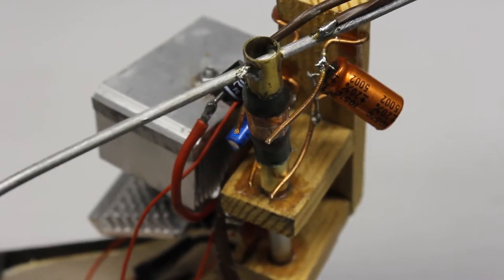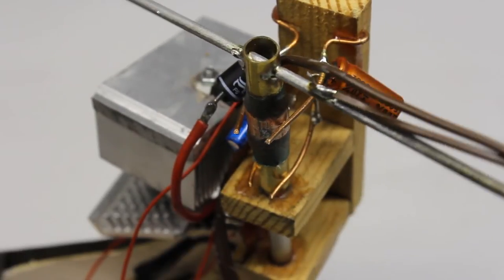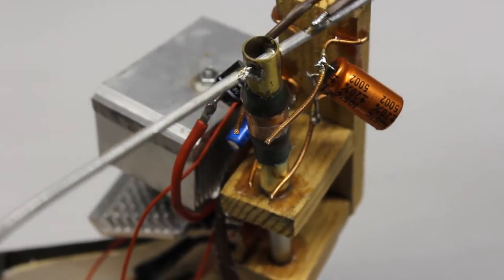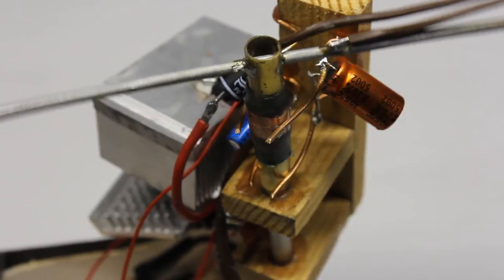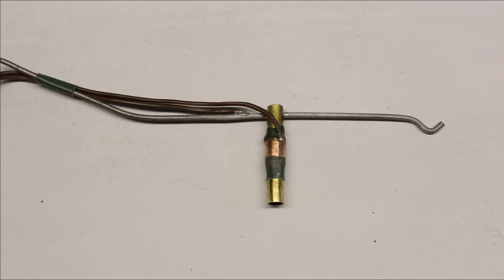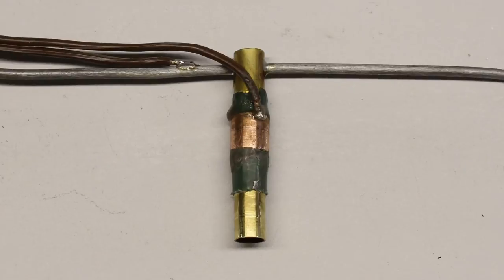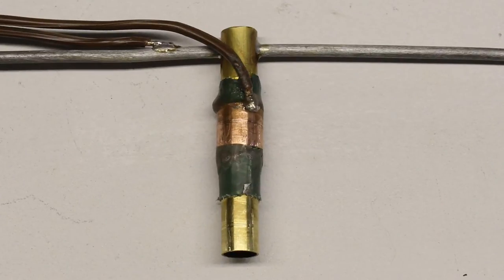Two sliding contacts are needed for ground and the positive supply voltage. The brass tube with ground potential is running through the upper copper ring, insulated by a stripe of duct tape.